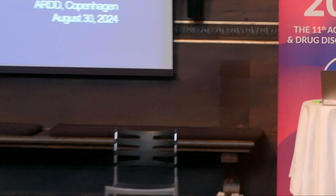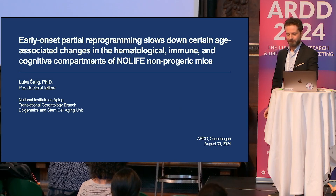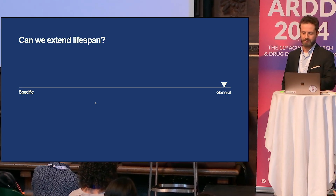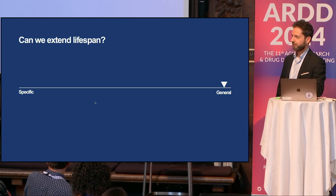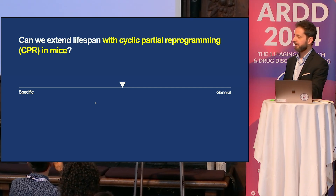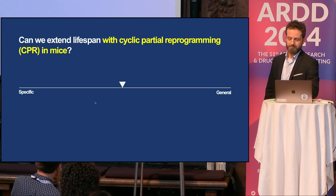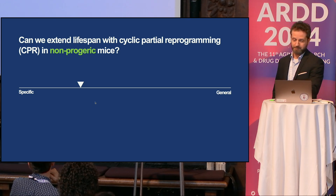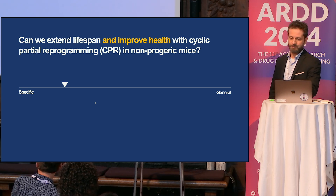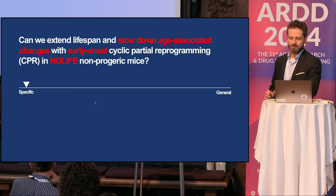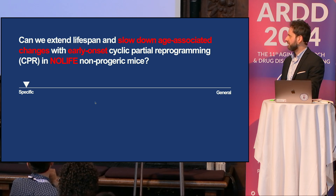I am a postdoctoral fellow at the epigenetics and stem cell aging unit at the NIA. I'll explain how I arrived at this specific title. We start with a very general question: can we extend lifespan? We know we can—we have caloric restriction and rapamycin. Can we do it with cyclic partial reprogramming, or CPR, in mice? Yes, but only in premature aging models. In non-progeric mice the answer is maybe, and when we include healthspan, we simply don't know. Rearranging the words gives you the exact question my title is answering.